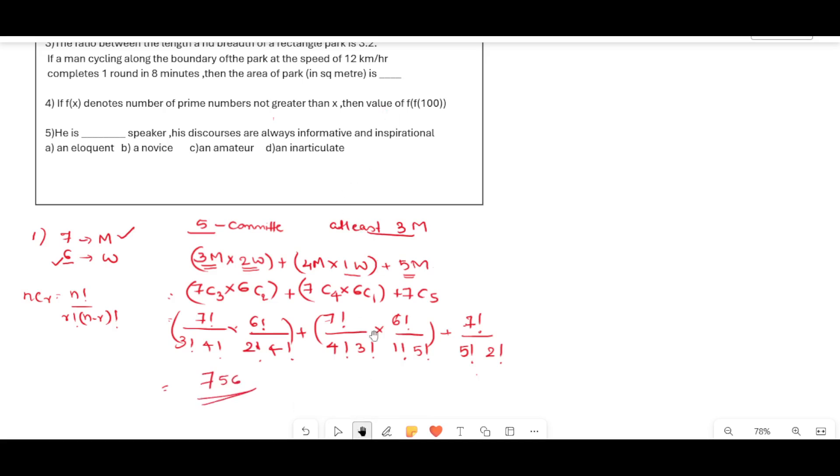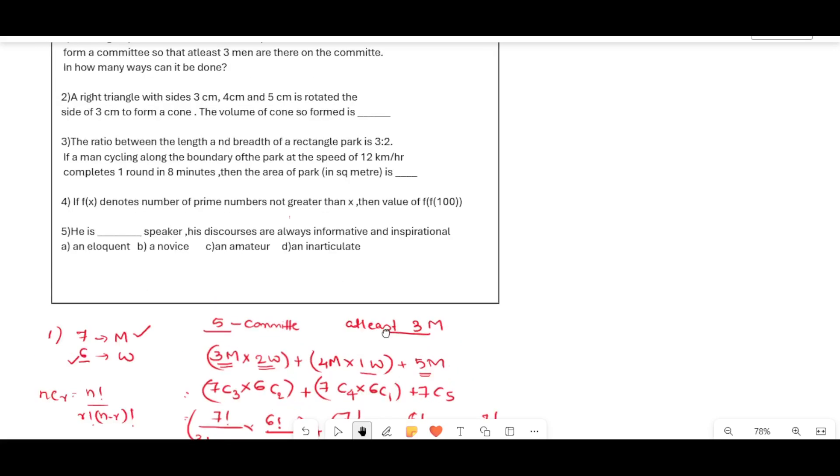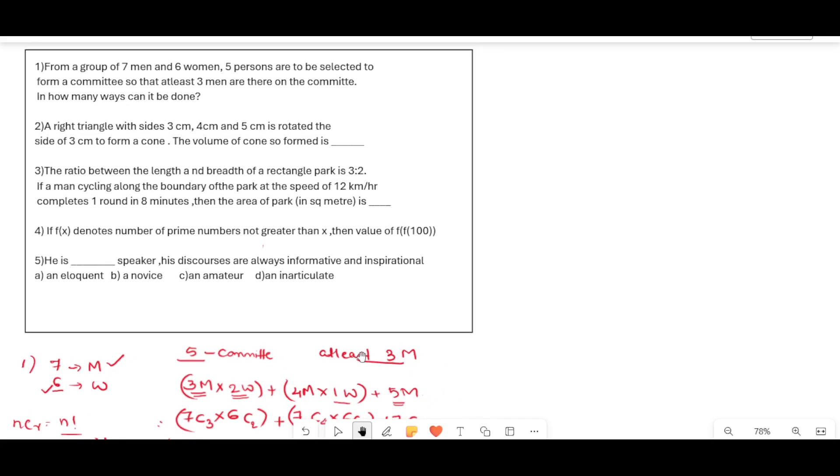Next we will see the second question. A right triangle with sides 3 cm, 4 cm and 5 cm is rotated the side of 3 cm to form a cone. The volume of cone so formed is?